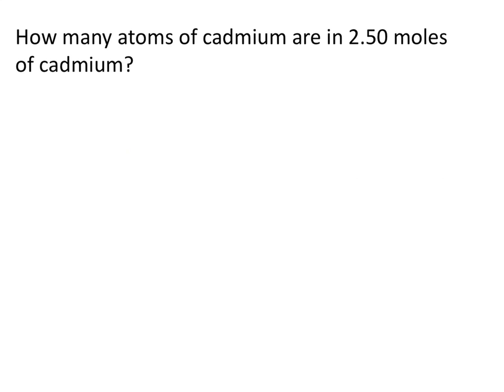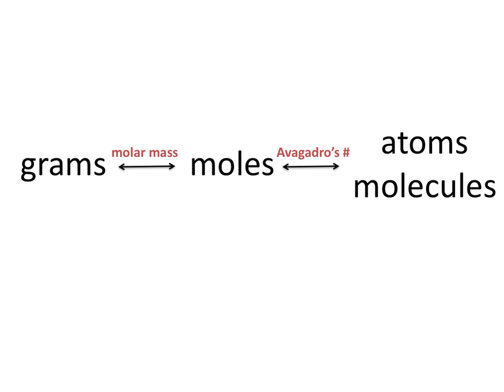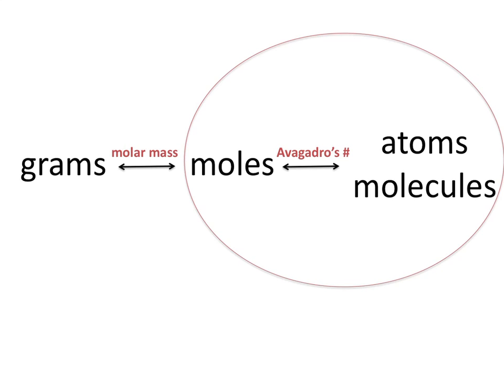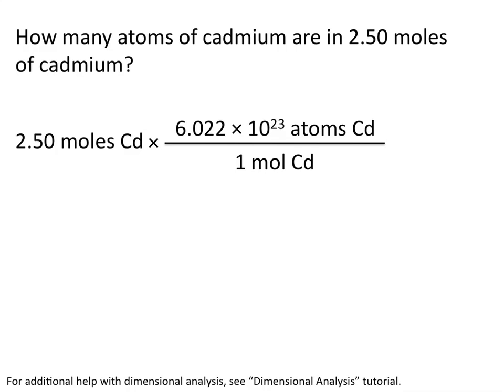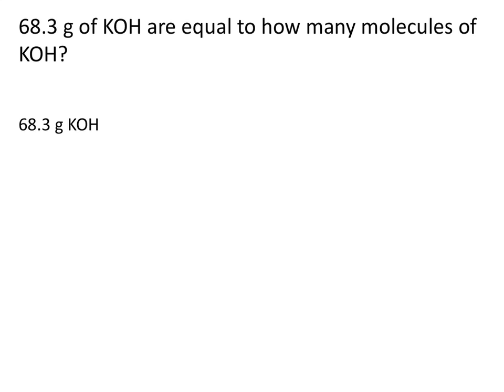Let's try an example. How many atoms of cadmium are in 2.5 moles of cadmium? We'll start with 2.5 moles of cadmium. We know that if we want to go from moles to atoms or molecules, we need to use Avogadro's number. So 1 mole of cadmium is equal to 6.022 times 10 to the 23rd atoms of cadmium, and we put moles of cadmium on the bottom so that moles will cancel out. This tells us that in 2.5 moles of cadmium, there are 1.51 times 10 to the 24th atoms of cadmium.